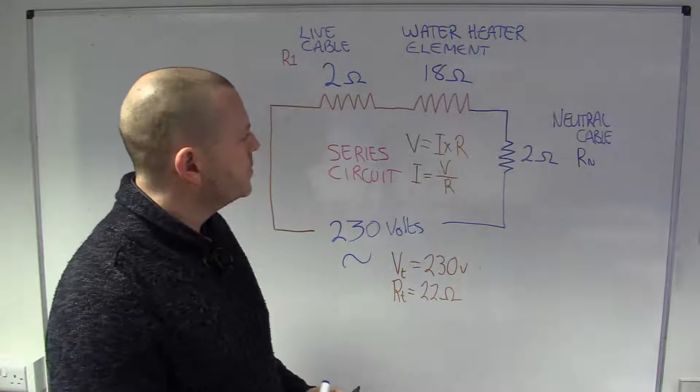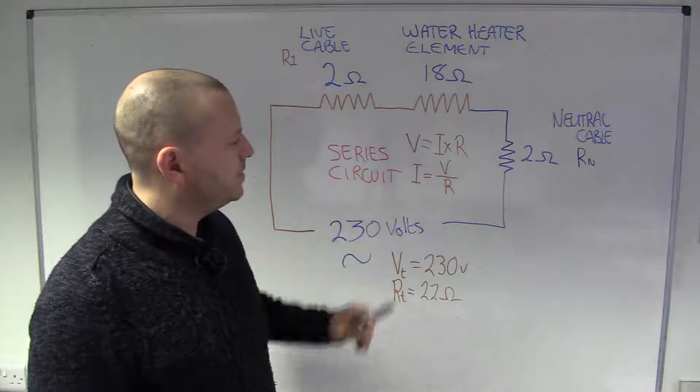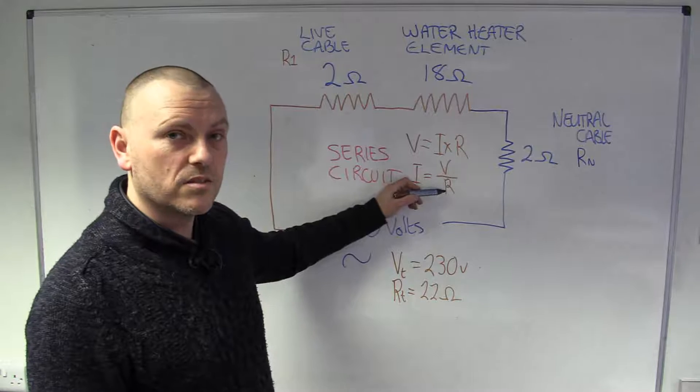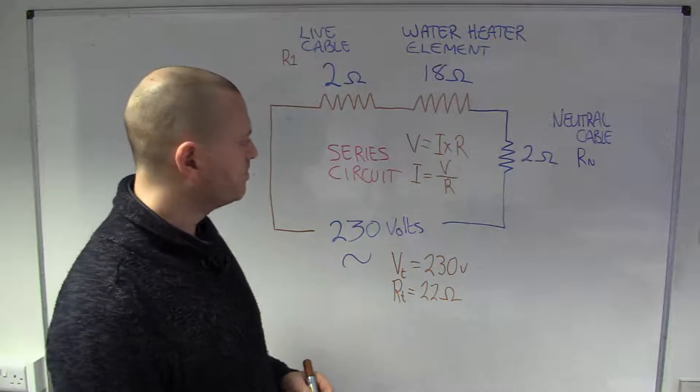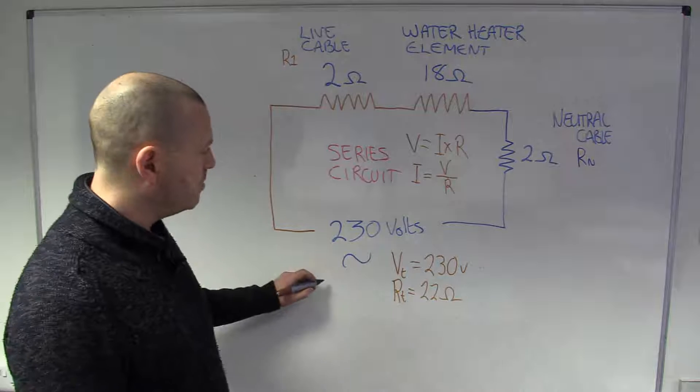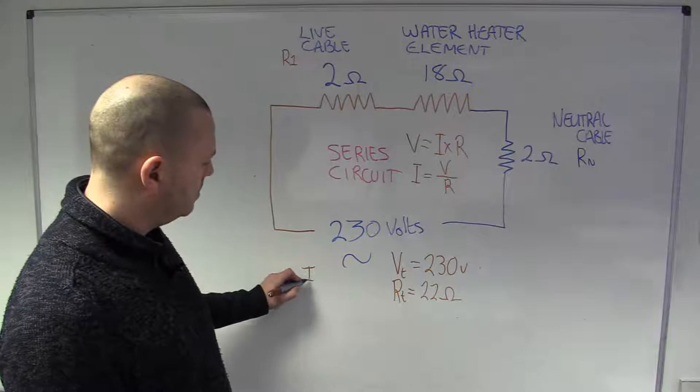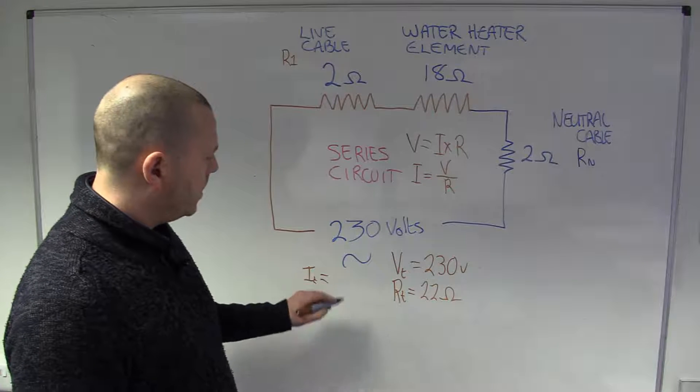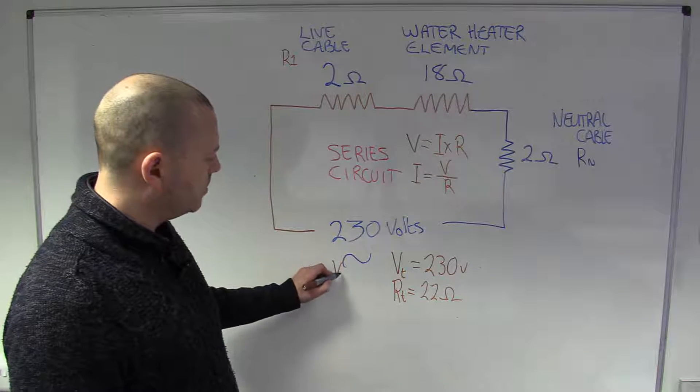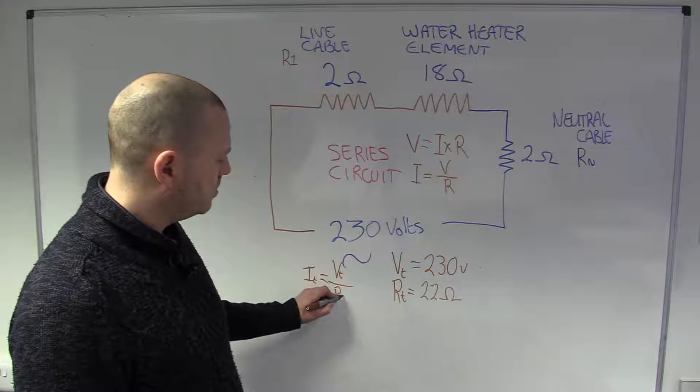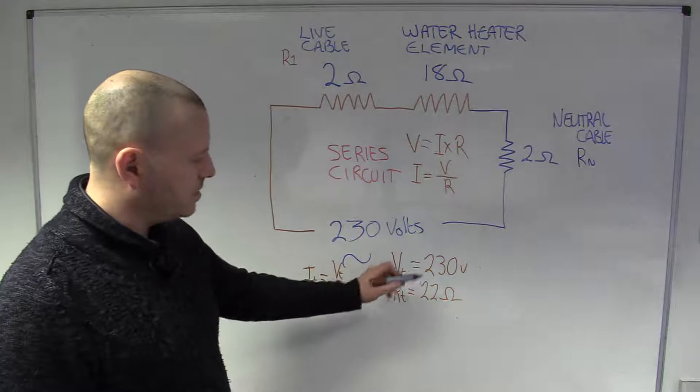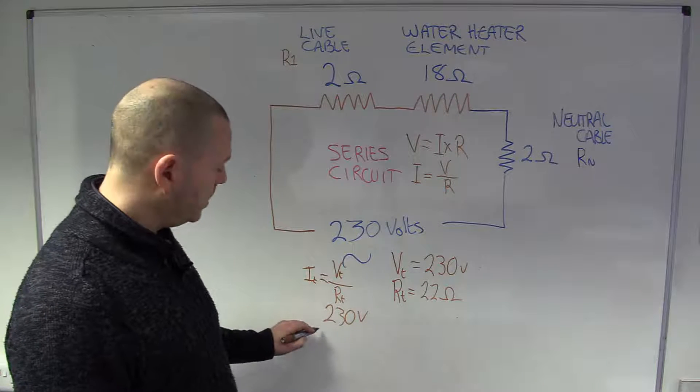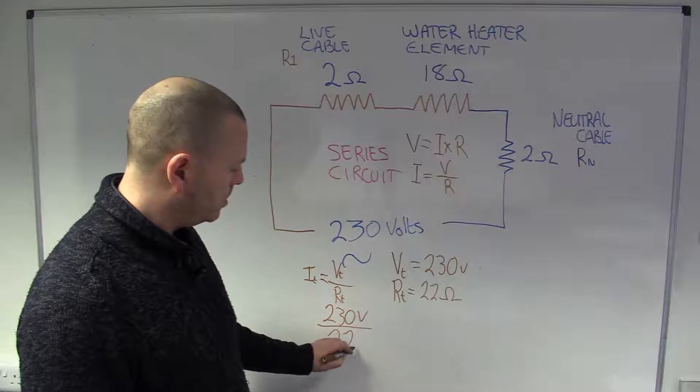Nearly there. So, let's calculate for the current now, because we've got the total voltage, and we've got the total resistance. So, we should be able to work out the total current. So, the sum, looking at it there, we'll call it IT, total current. It's going to be the total volts, divided by the total resistance, which in our case is 230 volts, divided by 22 ohms.